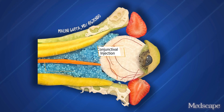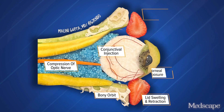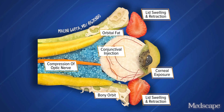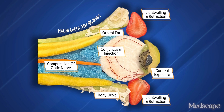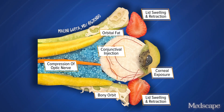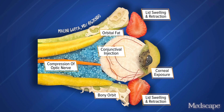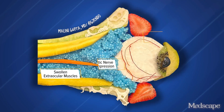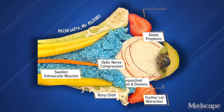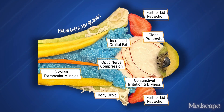The eyelids continue to swell and become red and swollen. The lids cannot fully close, and there is conjunctival irritation and corneal exposure to air. The muscles continue to swell, and the orbital fat compresses the optic nerve, and there can be afferent pupillary defects. Globe proptosis leads to conjunctival irritation and dryness.